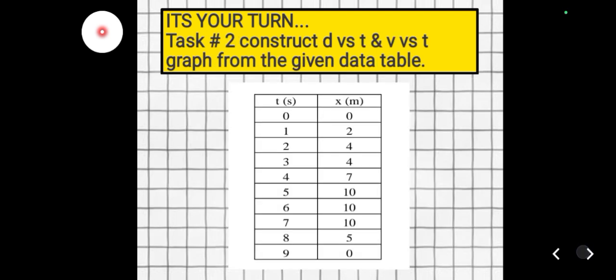For task number 2, instead of giving a graph, you are given a data table showing time in seconds and distance in meters. From this data table, construct a distance versus time graph, and then translate that into a velocity versus time graph. Write your answer on a piece of paper, take a photo, and submit or turn it in on Google Classroom.